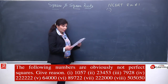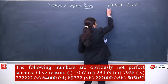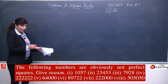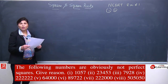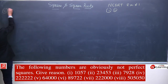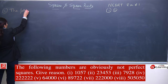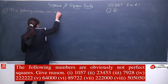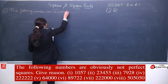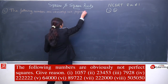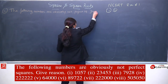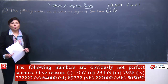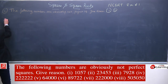Now the second question: 'The following numbers are obviously not perfect squares — give reason.' The question itself is already mentioning that whatever numbers are given are not perfect squares. We only need to write the reason why they are not perfect squares. Whatever properties we have studied, we will recall them here and apply those properties to give the reason.